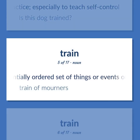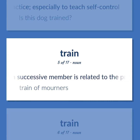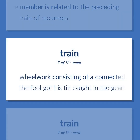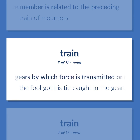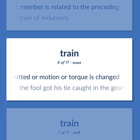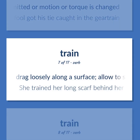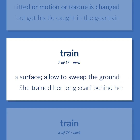A sequentially ordered set of things or events or ideas in which each successive member is related to the preceding. Train of mourners. Wheelwork consisting of a connected set of rotating gears by which force is transmitted or motion or torque is changed. The fool got his tie caught in the gear train. Drag loosely along a surface; allow to sweep the ground. She trained her long scarf behind her.